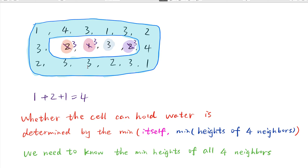But how to solve this problem? We know all the cells on the four edges cannot hold water, so we offer these cells into the heap. Then we pull a cell from the heap based on their height. For every cell, we only need to know the minimum height of its four neighbors, so we just need to visit each cell once. That means we also need a boolean array to mark whether we visited this cell before.